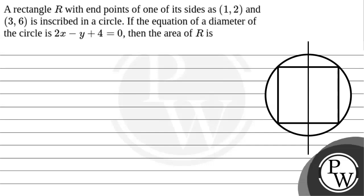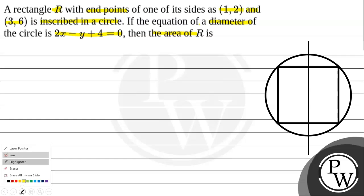Hello bachon. In this question it is given that a rectangle R with endpoints on one of its sides as (1,2) and (3,6) is inscribed in a circle. If the equation of the diameter of the circle is 2x minus y plus 4 equals to 0, then we have to find the area of the rectangle.